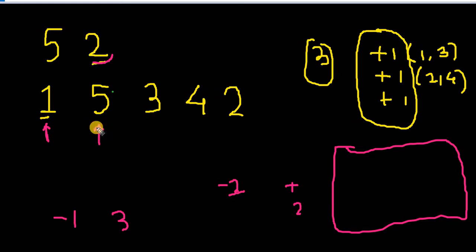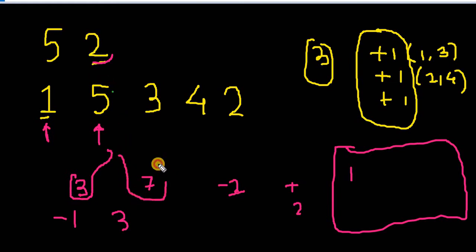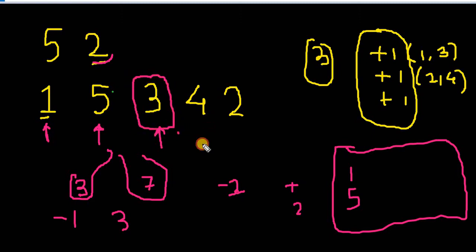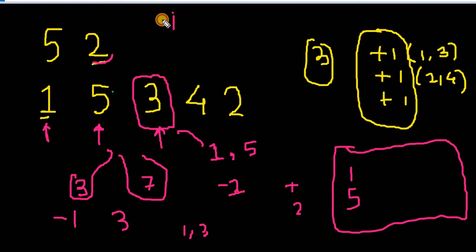Next, when 5 is taken as input (and only 1 is in the map), we check if 5-2=3 or 5+2=7 exist — no, so 5 is added to the map. When input is 3, we check 3-2=1 — yes, 1 exists, so increment count (pair: 1 and 3). Then check 3+2=5 — yes, 5 exists, so increment count again (pair: 3 and 5). This gives us 2 counts so far.